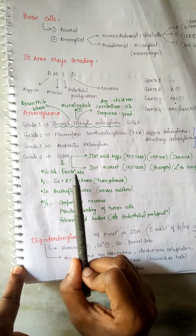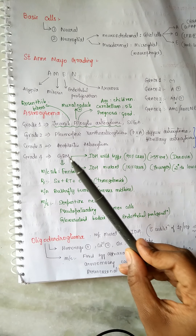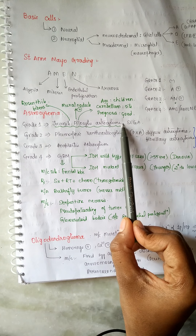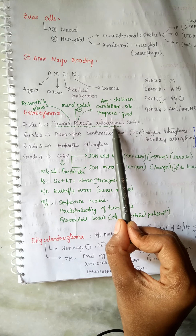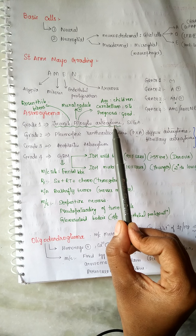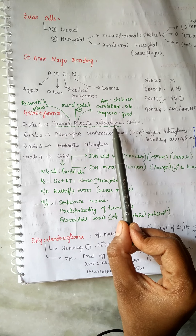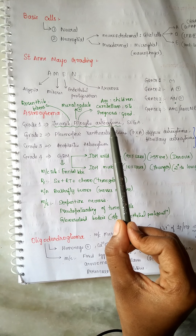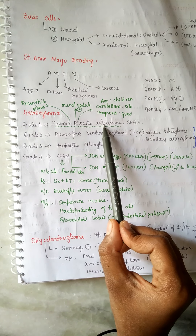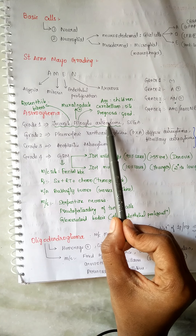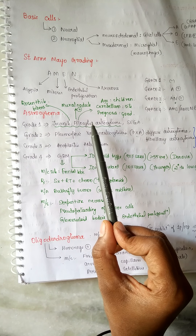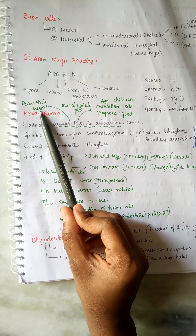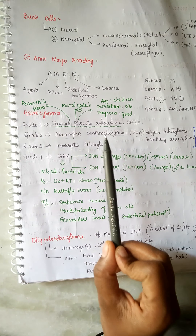Juvenile Pilocytic Astrocytoma is the most common tumor in the children age group. The site of the tumor is the cerebellum, and the prognosis is very good. Characteristic features of pilocytic astrocytoma include Rosenthal fibers (positive) and mural nodules (positive).